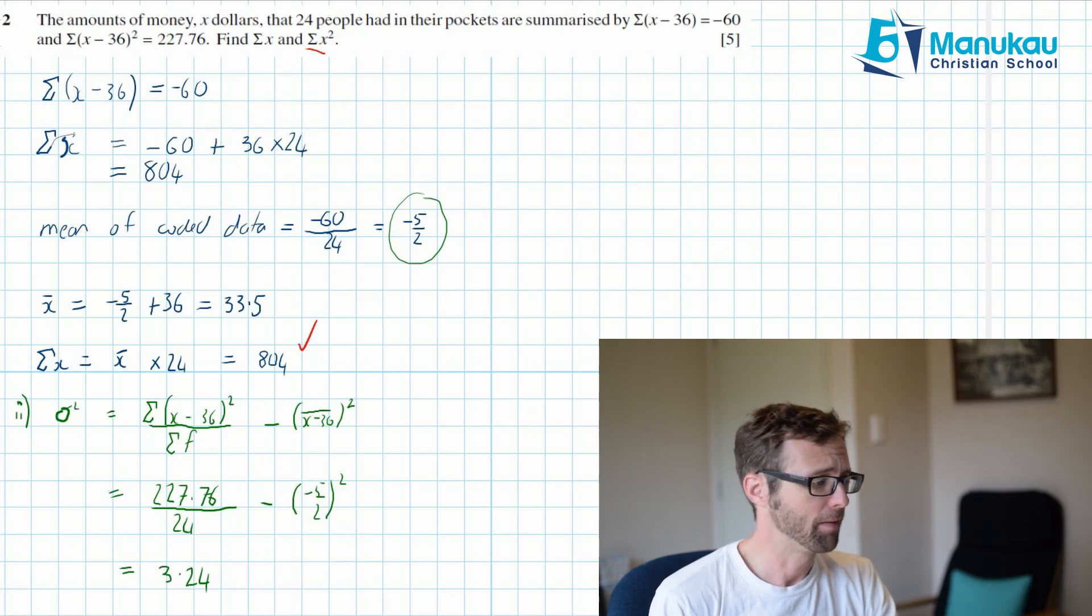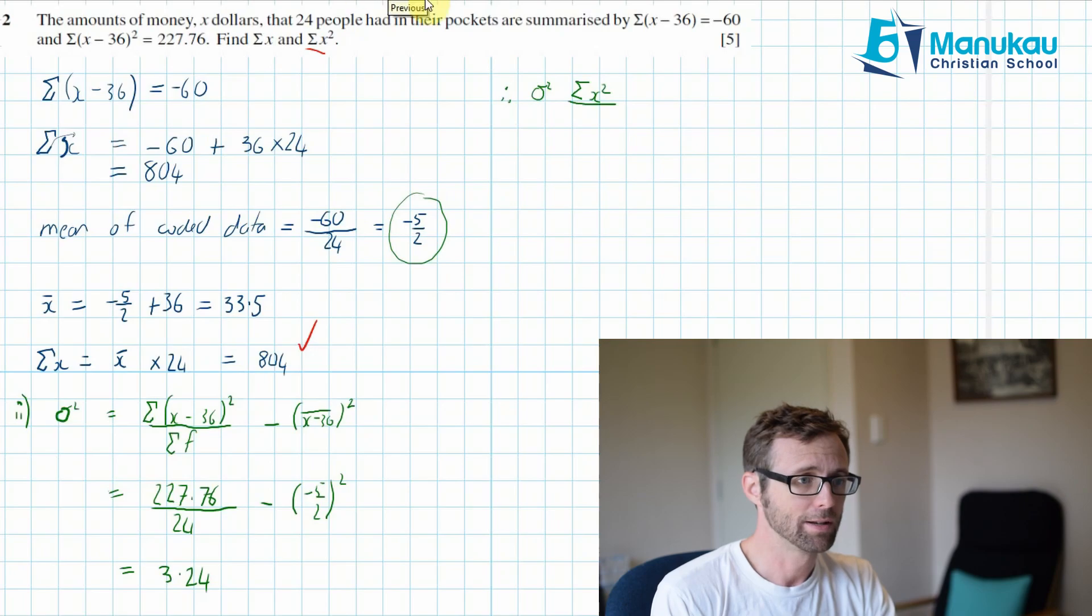Maybe you want to check on that. Now, if that's the case, we therefore know that the variance of the uncoded data is also 3.24. So we can set up our formula, the sum of X squared, which is what we want to find, over the sum of the frequency, minus the mean squared is going to be equal to 3.24.